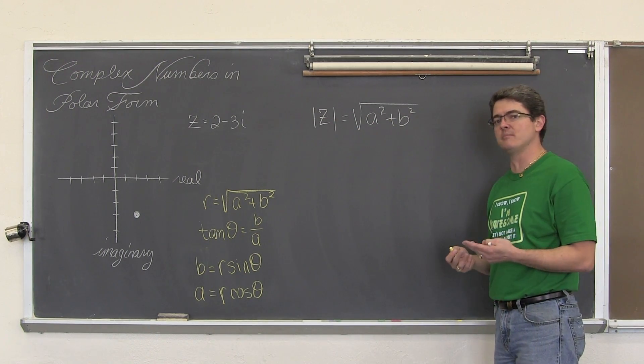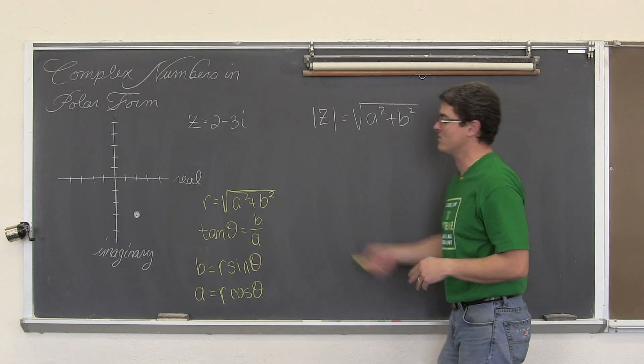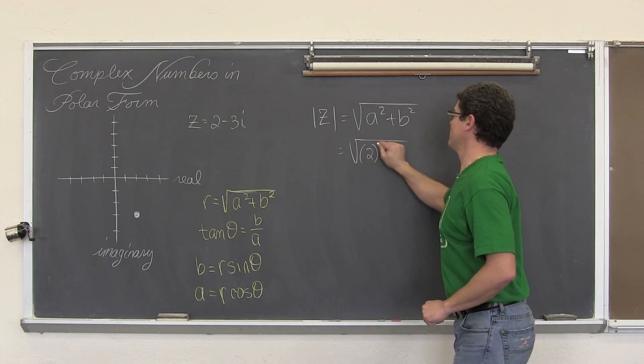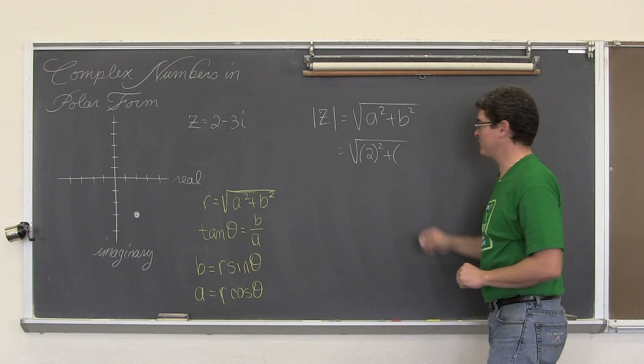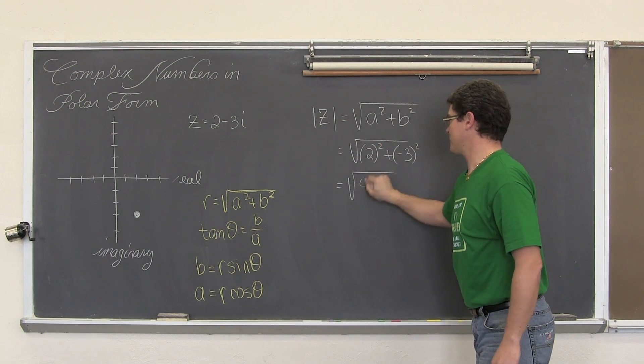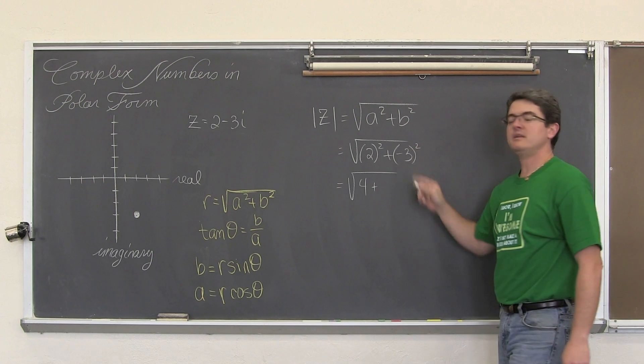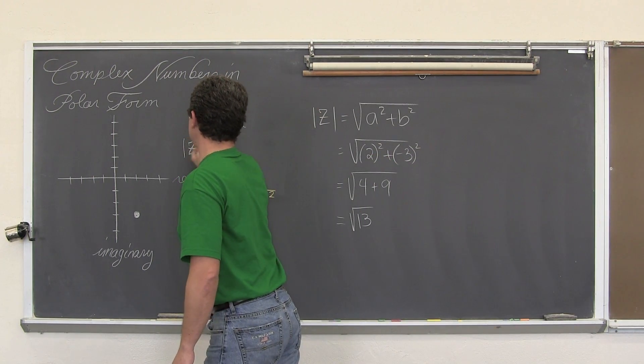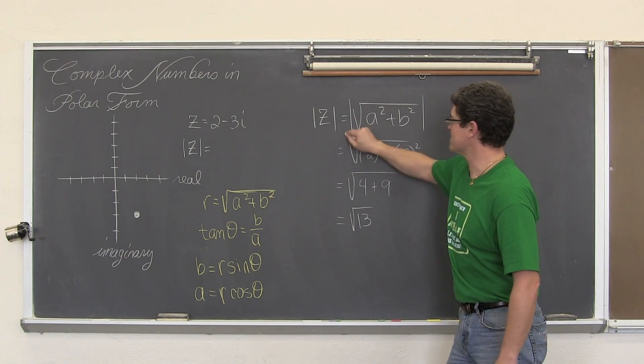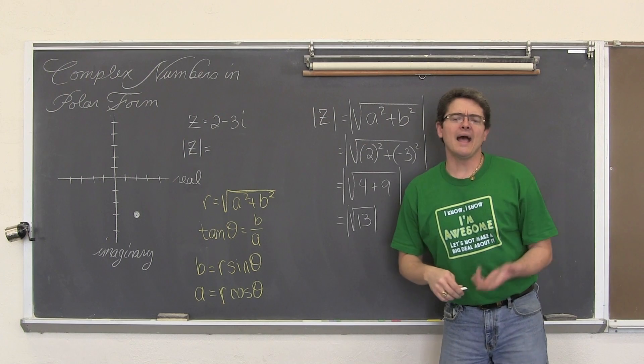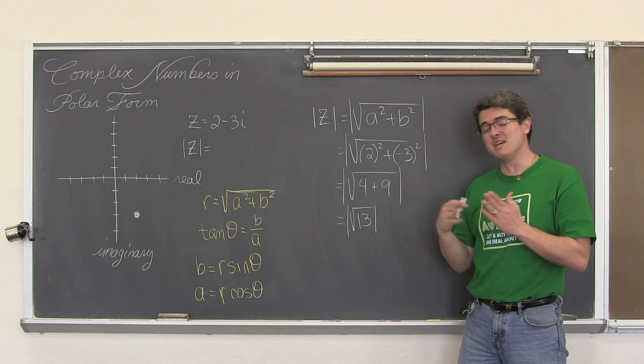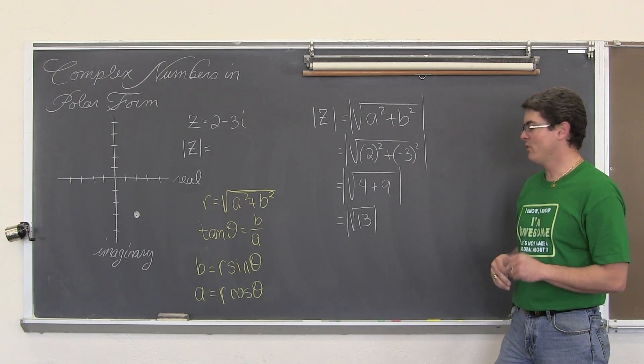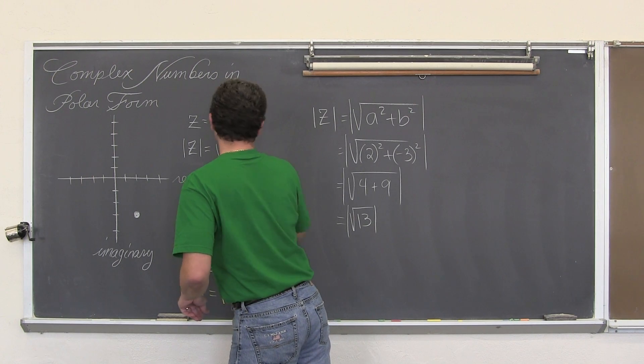The absolute value of a complex number is simply how far it is away from the origin. You should be recognizing this as either r, or again Pythagorean Theorem. So this comes out to be the square root of a, the real part, 2 squared, plus b, the imaginary coefficient of negative 3. That comes out to be the square root of 2 squared is 4 plus negative 3 squared which is 9, or the square root of 13. So the absolute value of z in this example is the square root of 13.